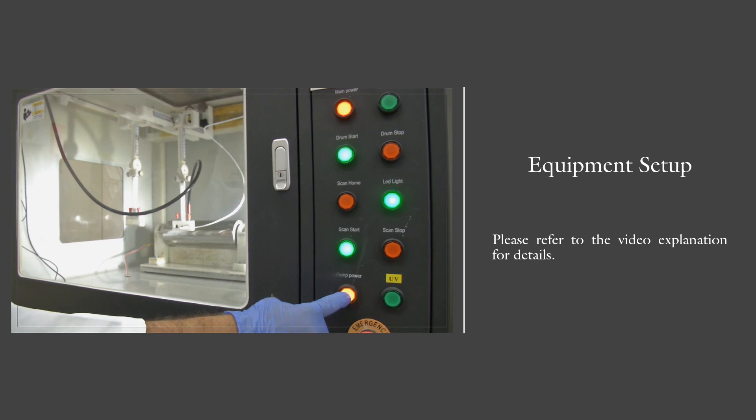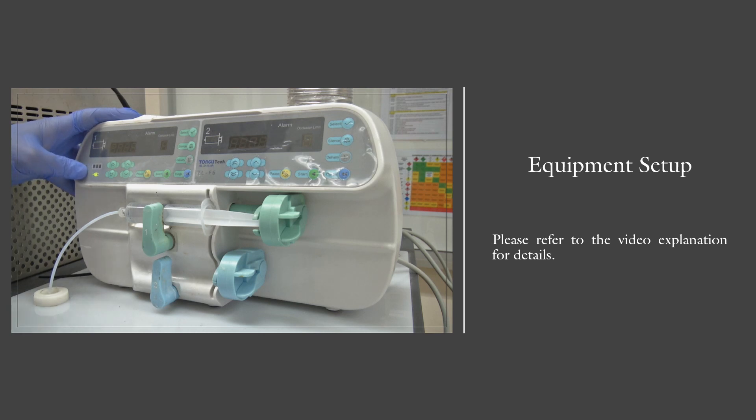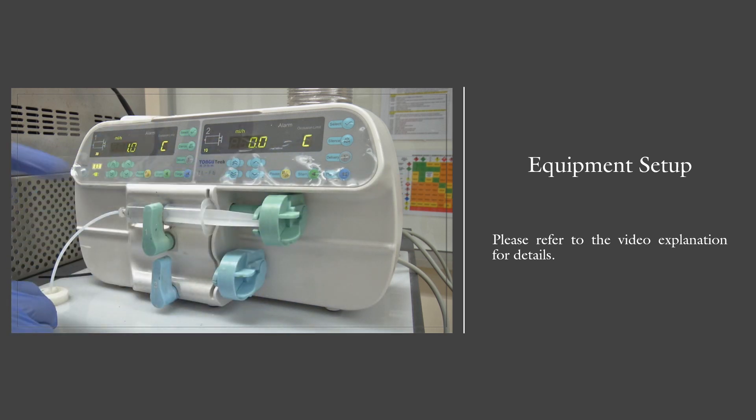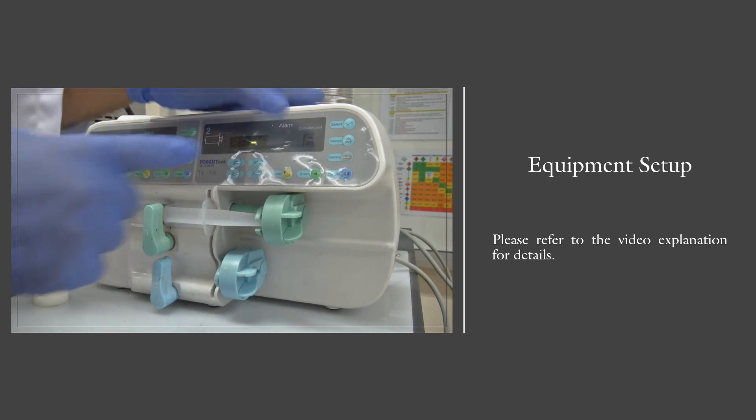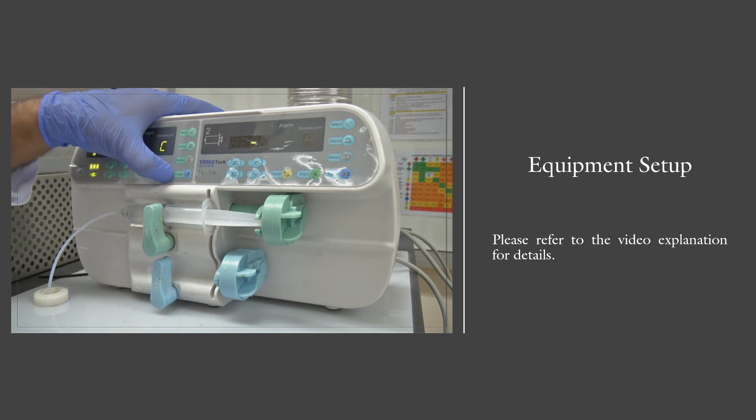We turn on the pump power. Now we have to set up the syringe pump. We have to turn it on first. If we have two syringes, we can turn both on, but since we only have one, we'll just turn off this one, cut the power for this one. We will select the feed rate that we want and click on.